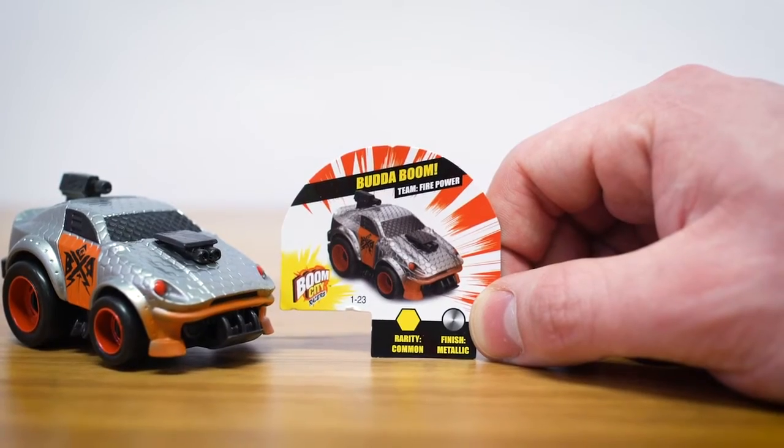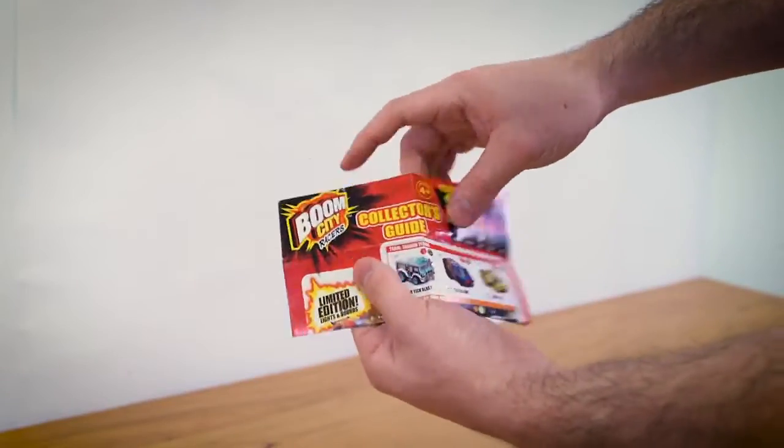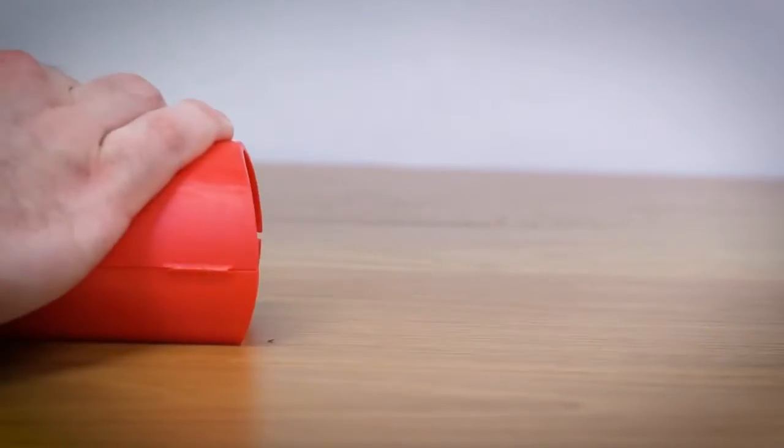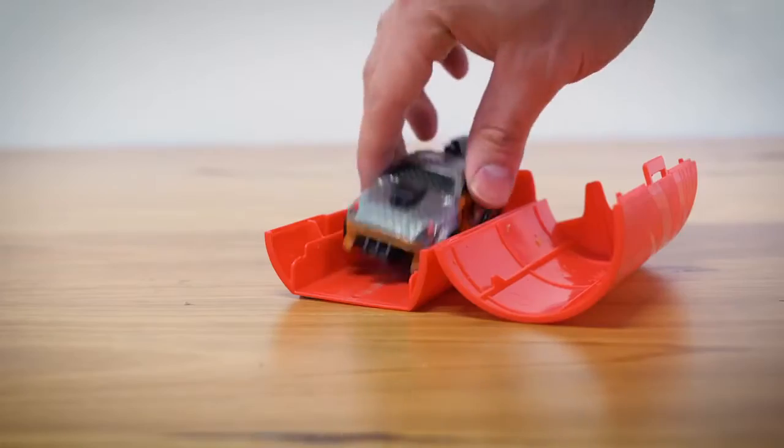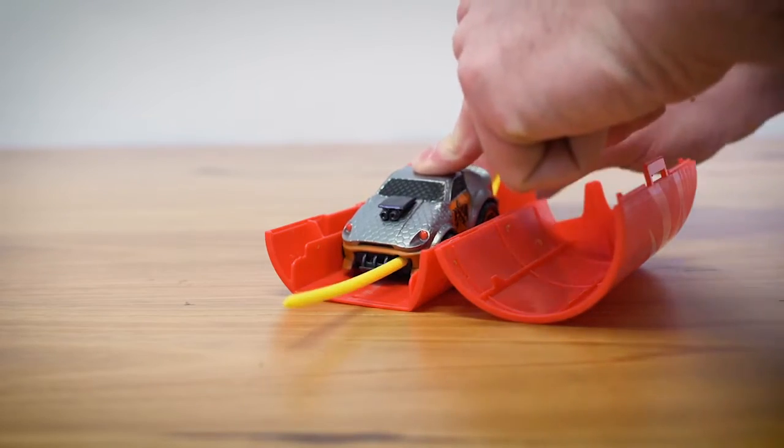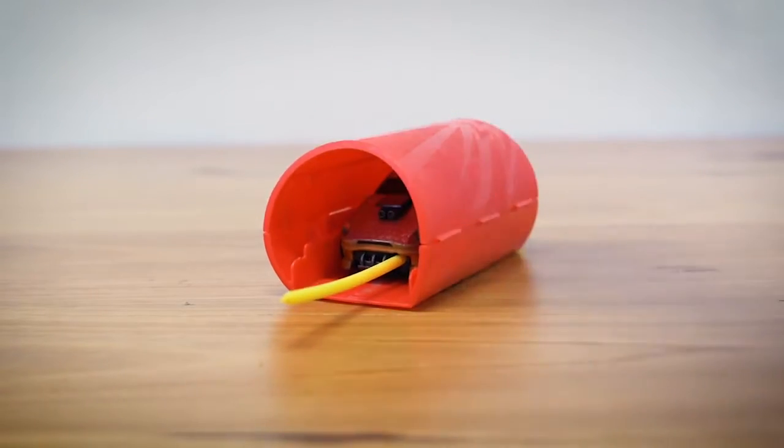Every car has a unique collector's card. There are over 24 cars to collect. After you've unboxed your Boom City Racer, you can launch it again and again. Pop the car back in the launcher, place the rip cord, close the hatch, and let rip!